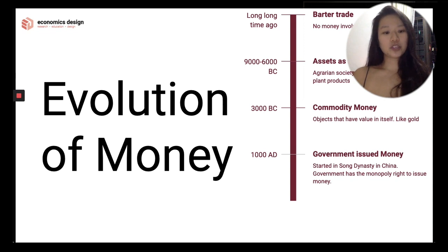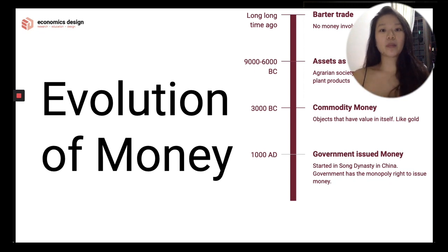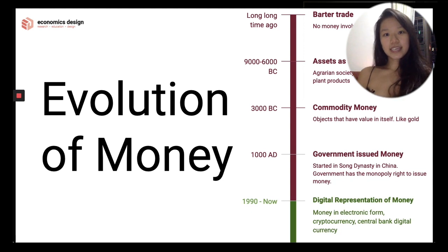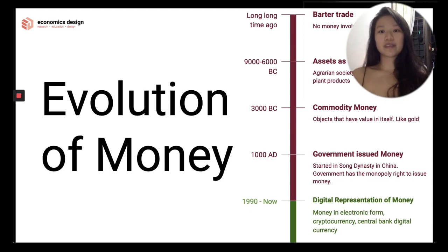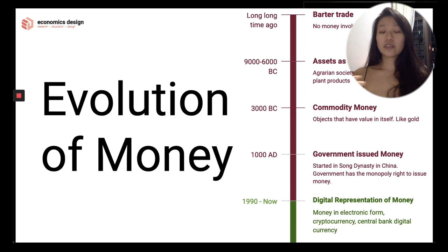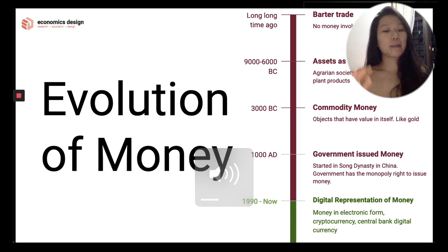The government saw this as an opportunity to manage the economy with debt and took over the issuing of credit — this was arguably the first central bank, with a monopoly on issuing money. In the 1990s, we have digital representation of money. With the advancement of technology, we create money in electronic form. Central banks distribute money to banks so citizens can withdraw and use them. There is also privately-issued money: digital money, e-sports money, or cryptocurrencies.